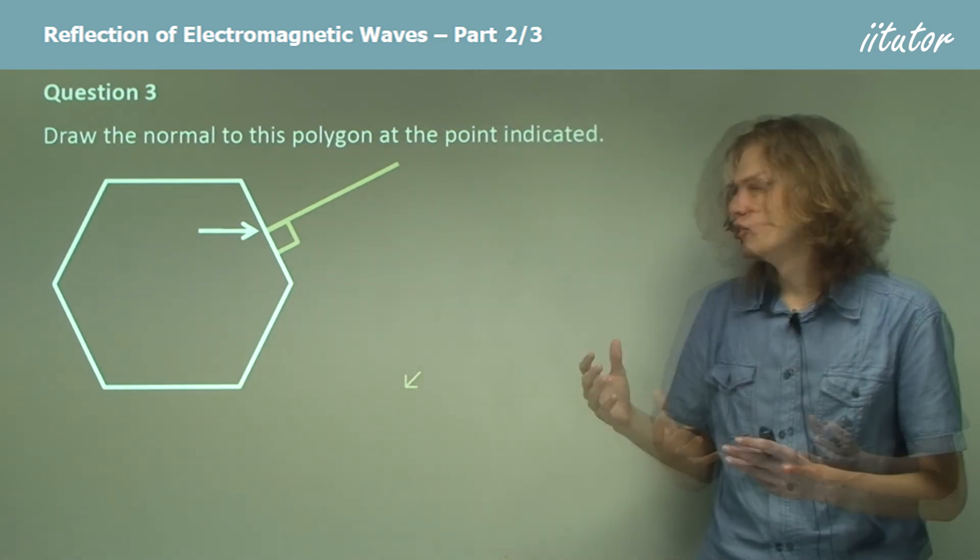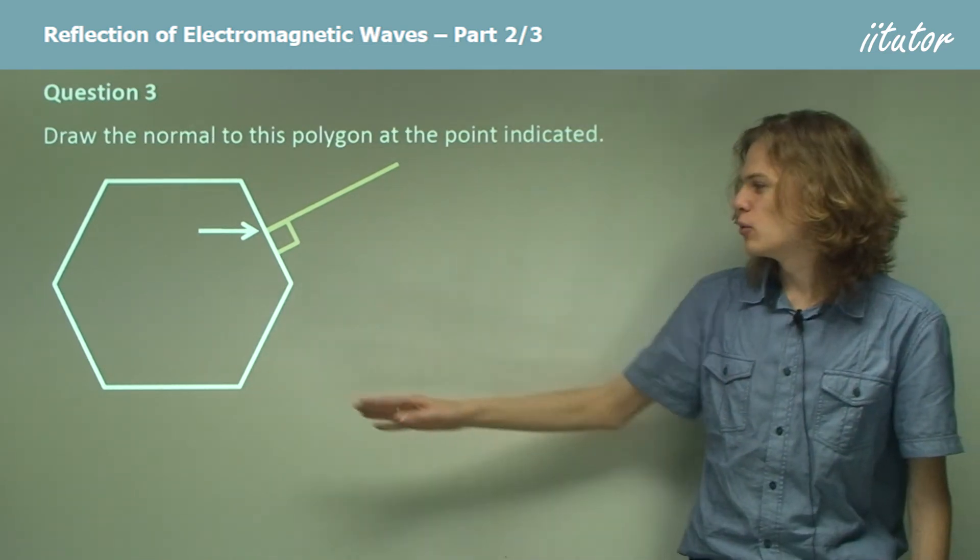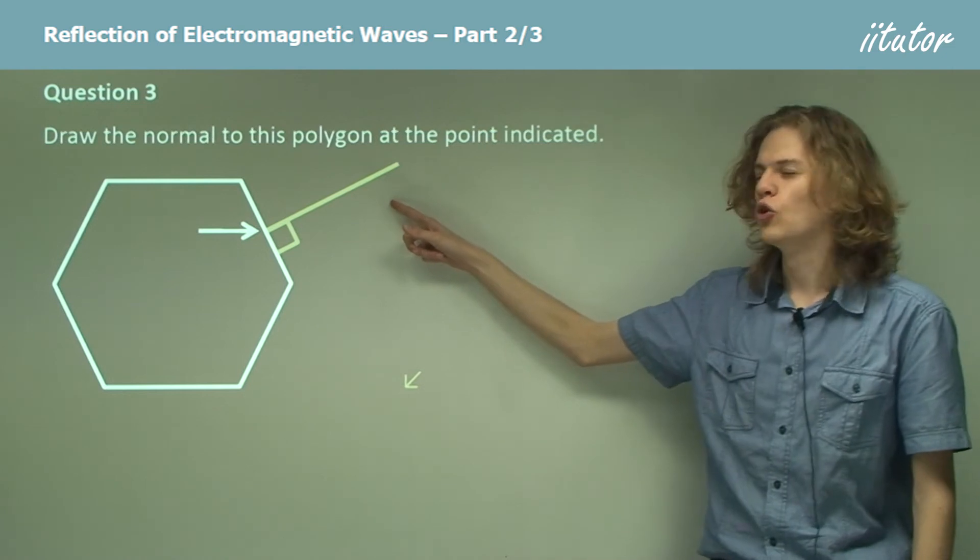And similarly, the normals drawn at the top or bottom edge of the hexagon would also be parallel, although they would not be parallel to this other normal that we've drawn.